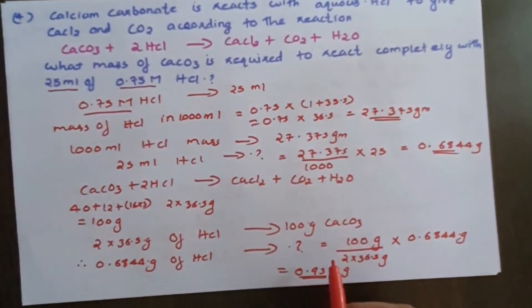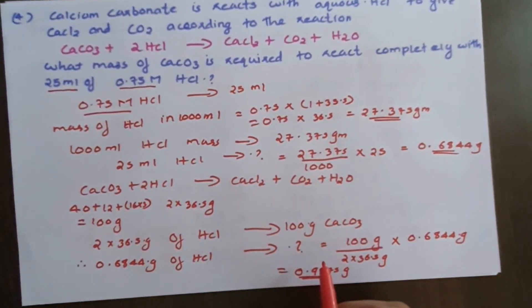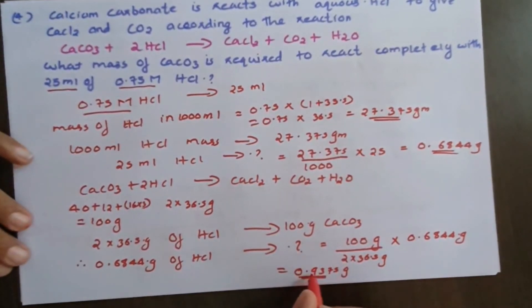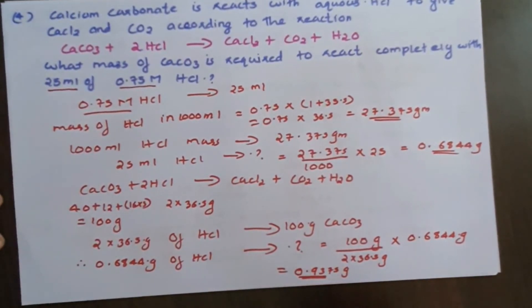For 0.75 M HCl, the mass of calcium carbonate required is 0.9375 grams. That's the answer.